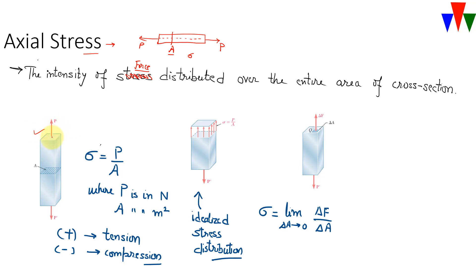As you can see in the diagram, we have forces P and P' applied at both ends. From body equilibrium, P equals P'. The area is uniform and equal to A, so the stress will be P over A — force per unit area. The unit of force is Newton and area is in square meters, therefore the stress unit is Newton per square meter, or Pascal. One Pascal equals one Newton per square meter.